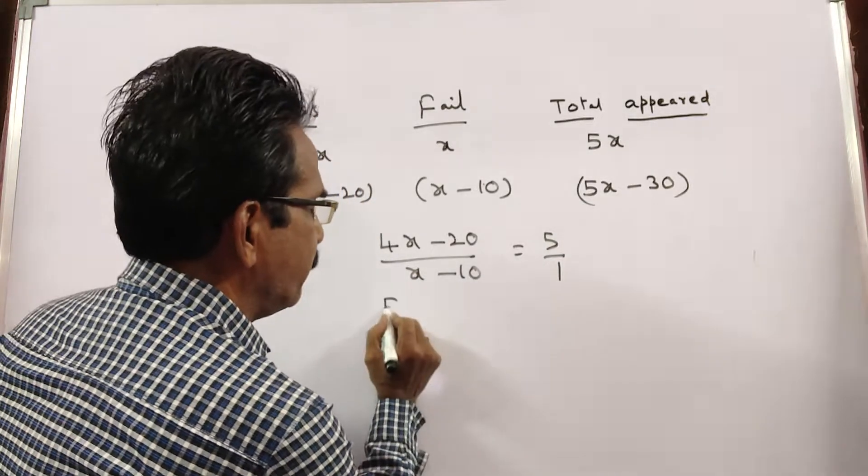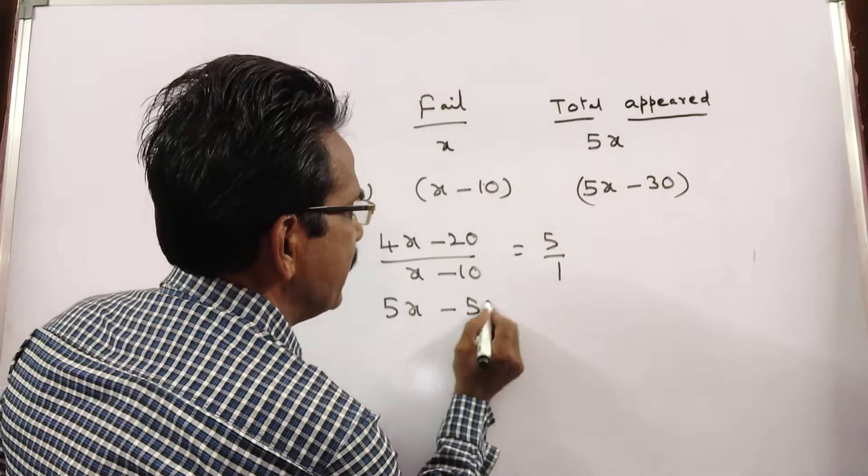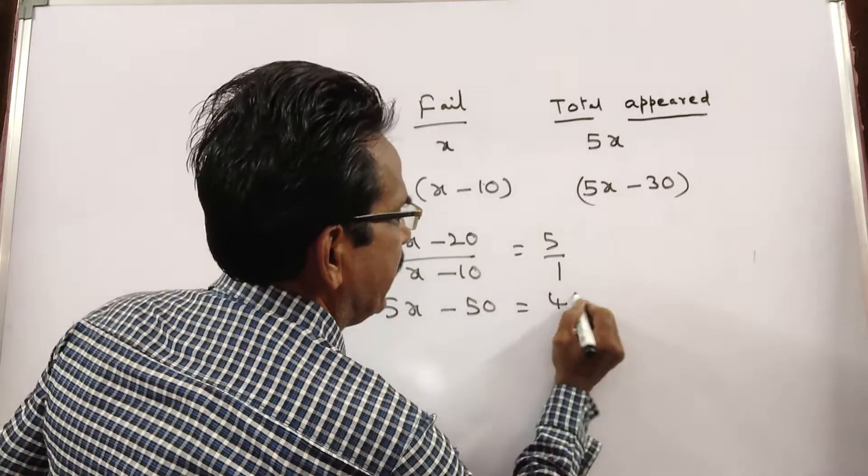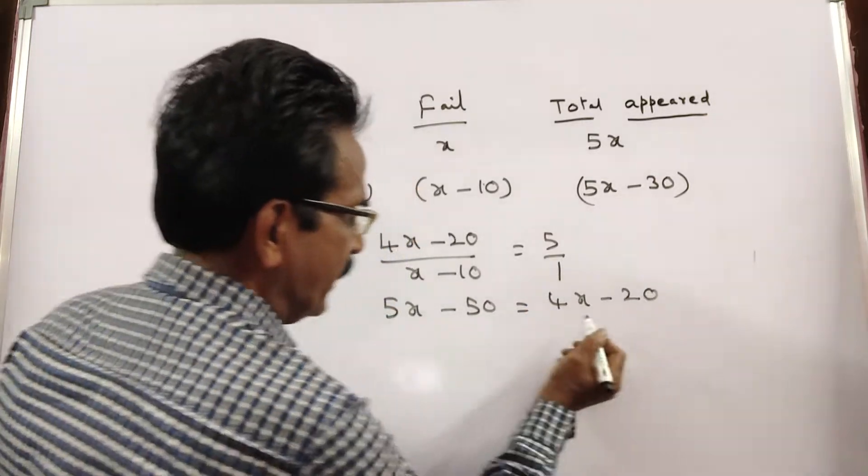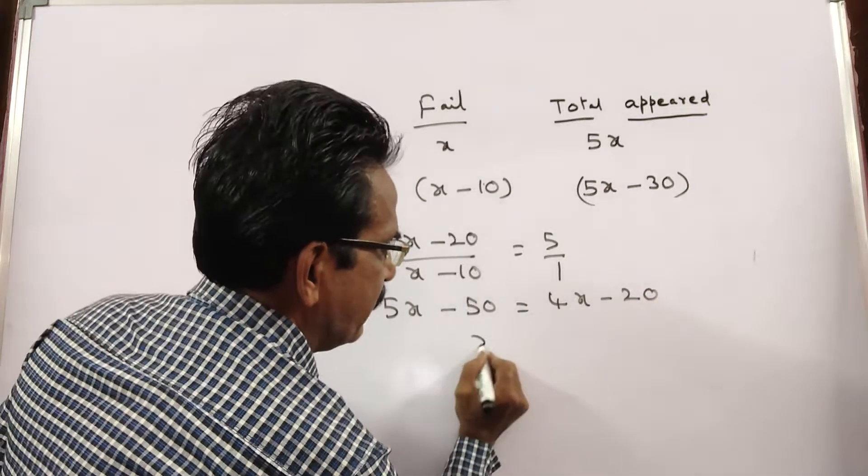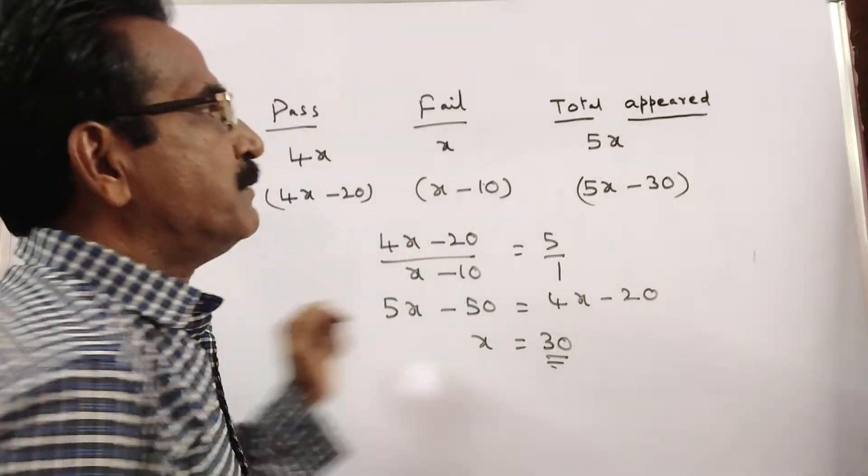So 5x minus 50 equals 4x minus 20. So x equals 30.